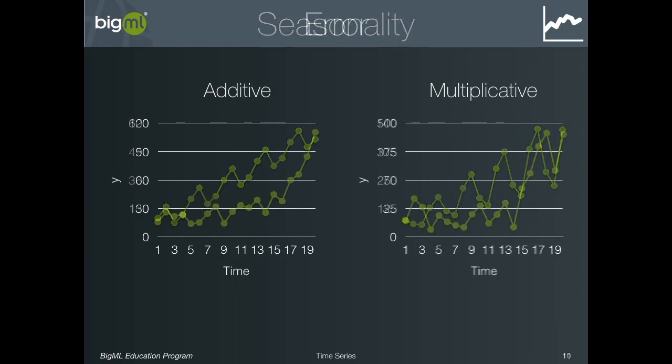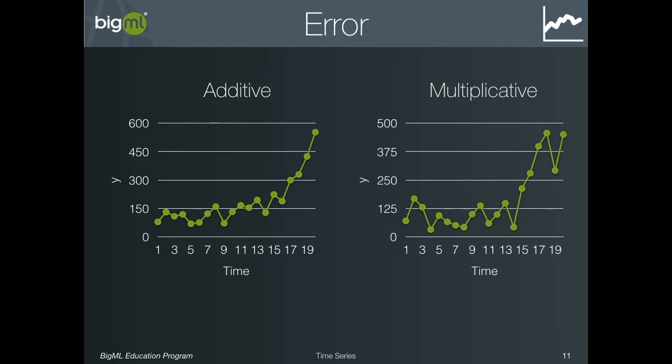The final thing the model attempts to account for is error — variation based on noise that cannot be accounted for by trend or seasonality. Again, this can be additive or multiplicative, based on whether the error is constant regardless of the data values, or gets larger as the data values increase in size.